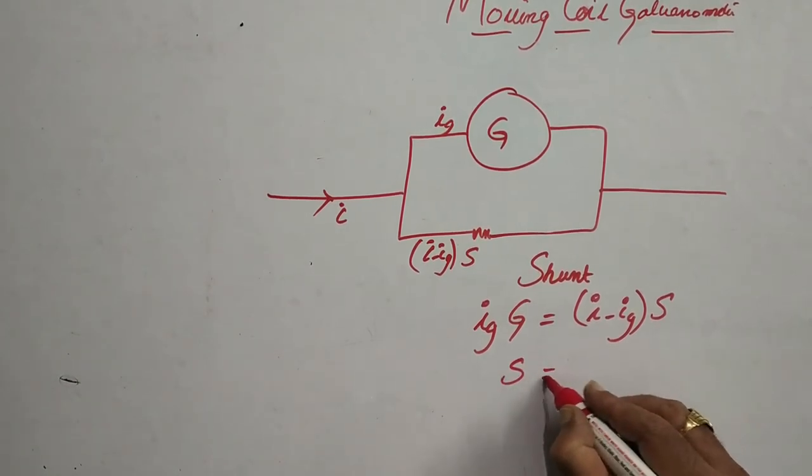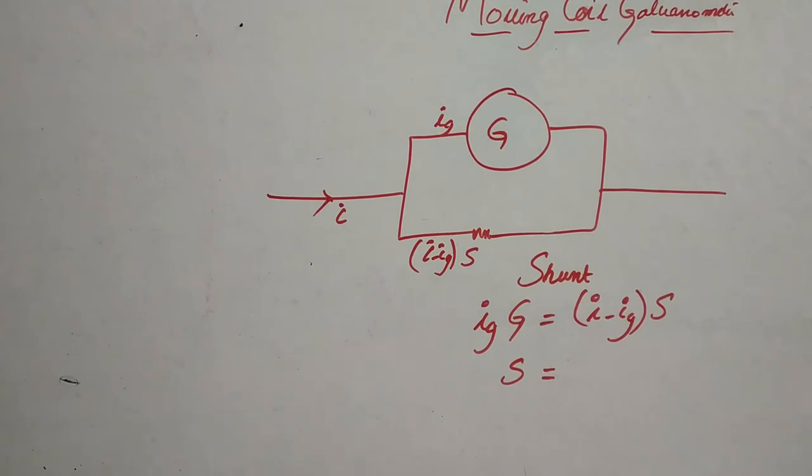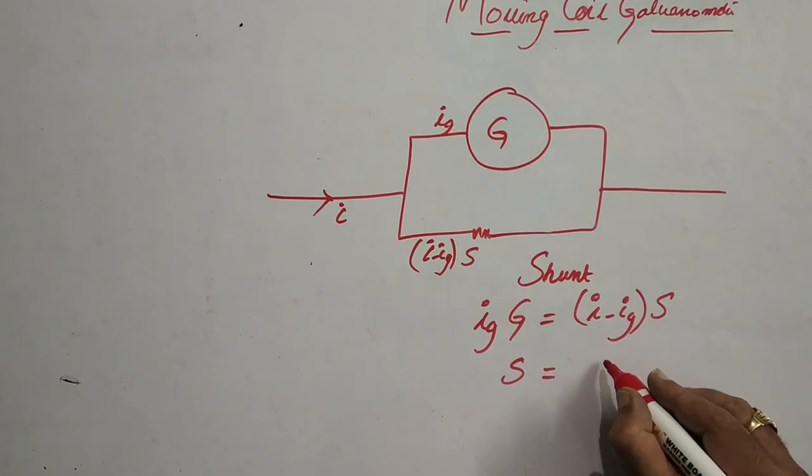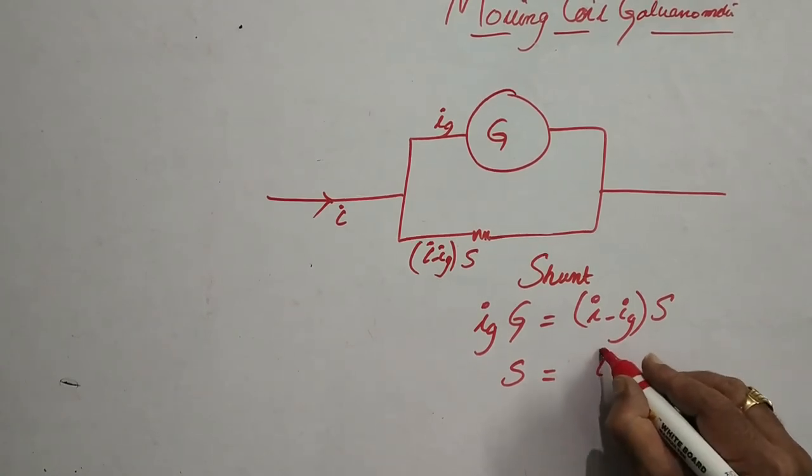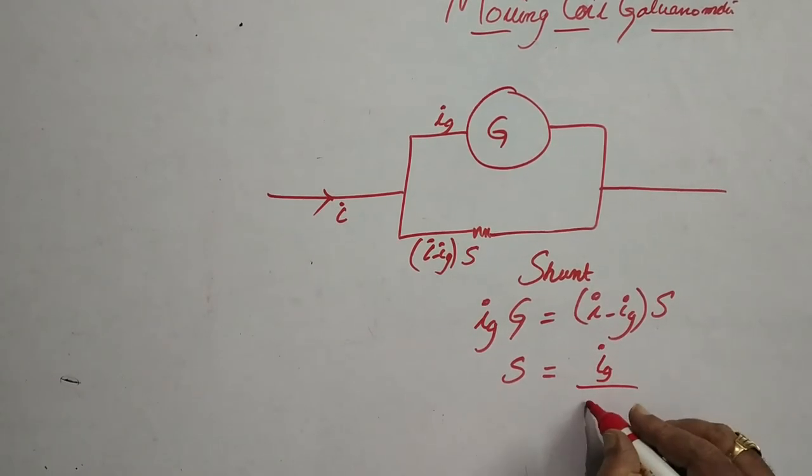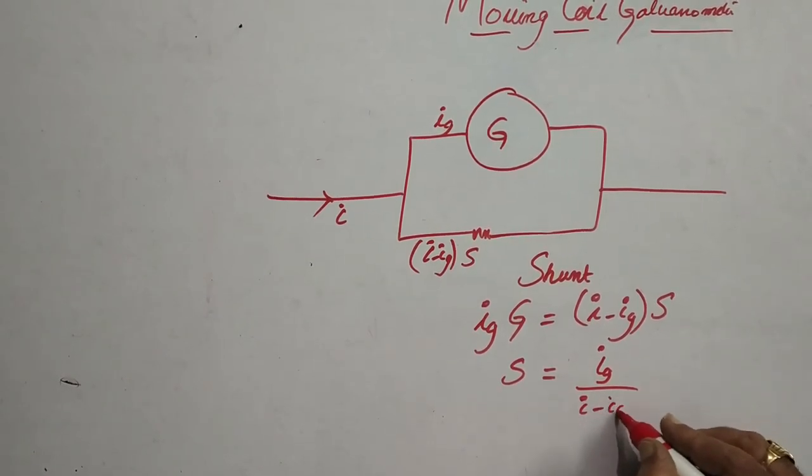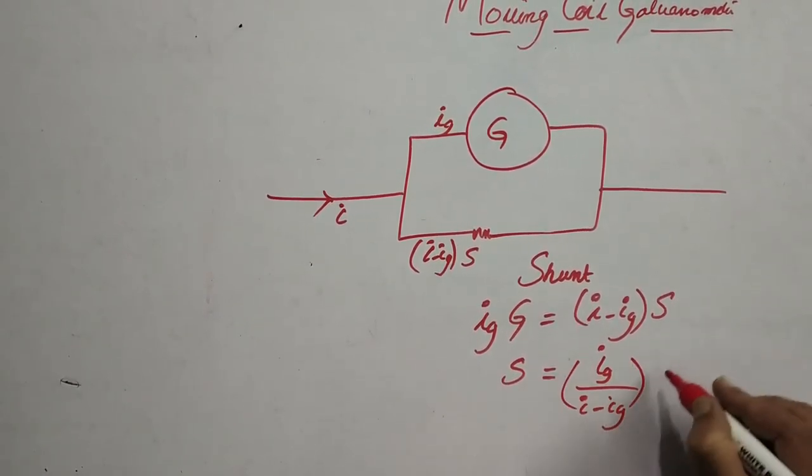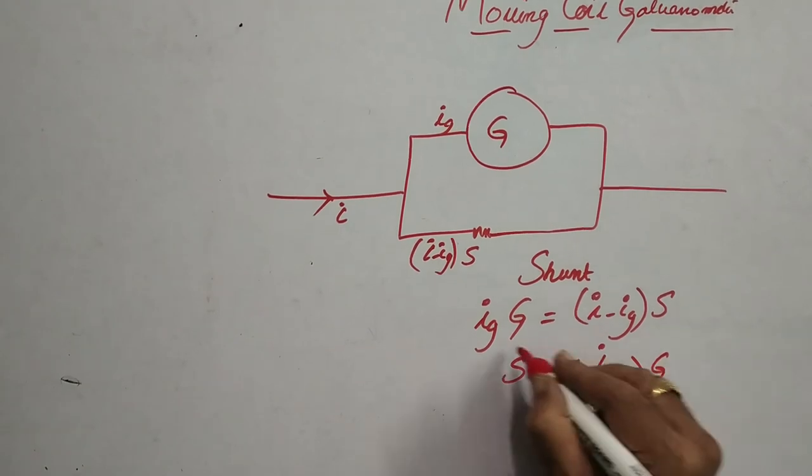S, the value of shunt to be connected to calibrate the galvanometer of required measuring current in amperes will be IG by I minus IG times capital G.